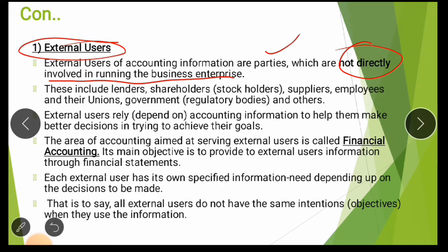External users of accounting information are parties which are not directly involved in running the business enterprise — they have an indirect relationship with the organization. External users are not directly involved in financial information. This includes lenders, shareholders, and stockholders — people who support the company financially but do not own or manage the business directly.